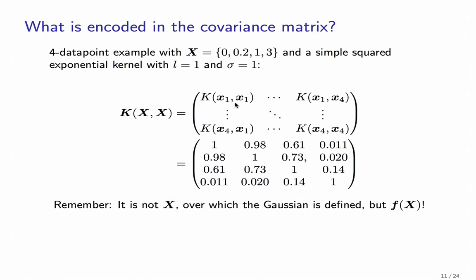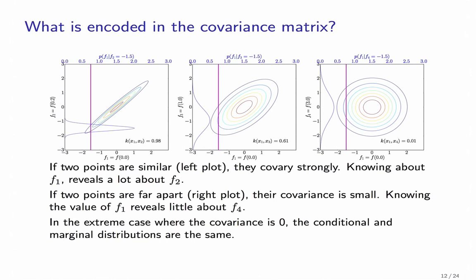Now, using the marginalization property of multivariate Gaussians, if you want to take a look at how just two function values are related to each other, then we just have to look at a submatrix of the covariance. So for example, for f1 and f2, we just need to look at this part. And here is some plot for these individual sub matrices.